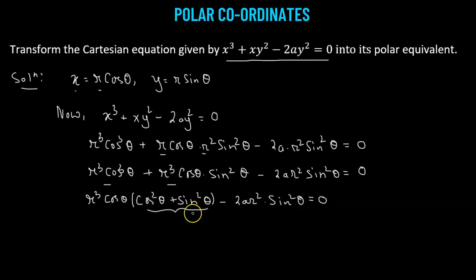Now, cosine squared theta plus sine squared theta—that's a standard trig identity with a value equals to 1. So we get r cubed times cosine theta.